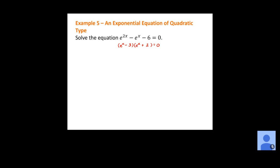Once factored, use the zero product property and set each factor equal to 0: e to the x minus 3 equals 0, and e to the x plus 2 equals 0. Solving the first one, add 3 to get e to the x equals 3. To get x out of the exponent with base e, take the natural log: natural log of e to the x equals natural log of 3. Our property says natural log of e to a power equals that exponent, so x equals the natural log of 3. That's one solution.